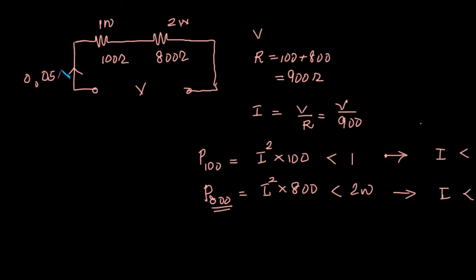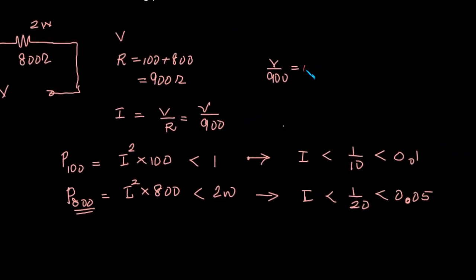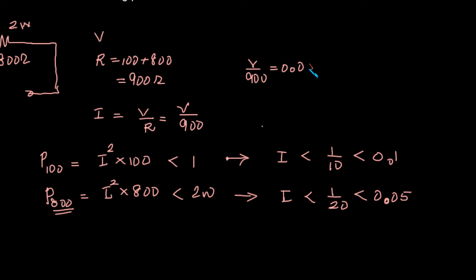We equate V divided by 900 to a maximum of 0.05 amps. So V should be less than or equal to 900 times 0.05, which is 9 times 5, equal to 45 volts. Therefore, the maximum voltage that can be applied across the circuit without exceeding the power limits is 45 volts.